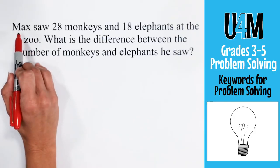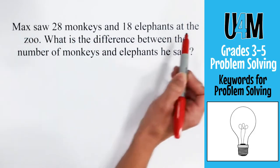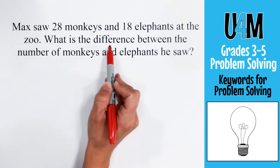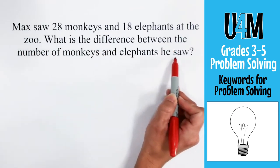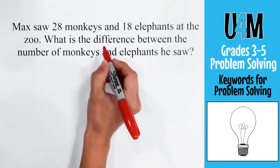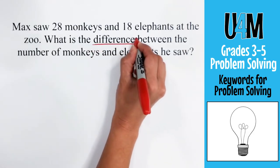So let's take a look at a subtraction problem where we'll encounter some of these keywords. In this word problem we have: Mac saw 28 monkeys and 18 elephants at the zoo. What is the difference between the number of monkeys and elephants he saw? Our keyword here is 'difference,' which is also the answer to a subtraction problem. Students often get confused about that term because they want to describe characteristics — like what's different between a monkey and an elephant — but we're looking for the numerical difference, which means we'll be subtracting.